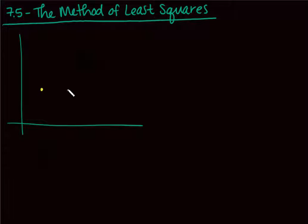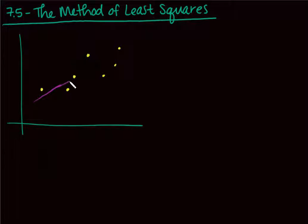So if I have some data points — a data set that does something like this — the idea of least squares is asking: can I find a line that I could draw through this data set to model it and possibly predict what it's going to do? Mathematicians like lines. Lines are easy to use.